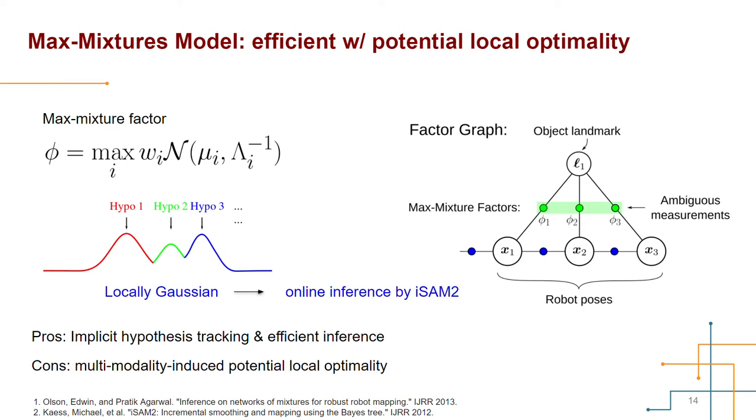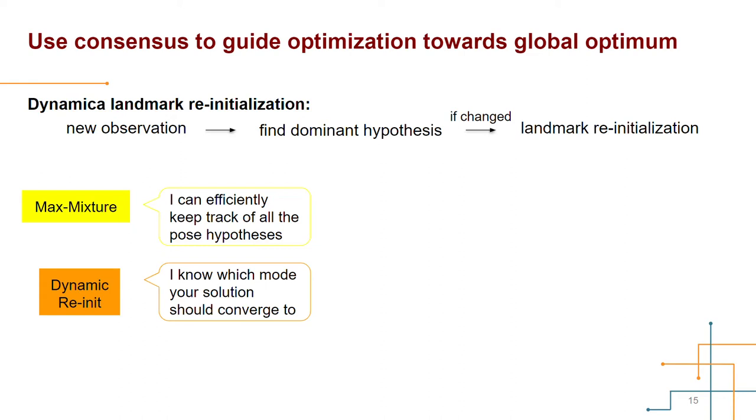So we propose to enable the flexibility of dynamically adjusting initializations of the ambiguous landmarks. So we can always restart the optimization in a different mode and guide the solution towards the global optimum. We do this using consensus over the pose hypothesis in ambiguous measurements. This process is called dynamic landmark re-initialization. It augments the local optimization over mixtures with global awareness of dominant modes.